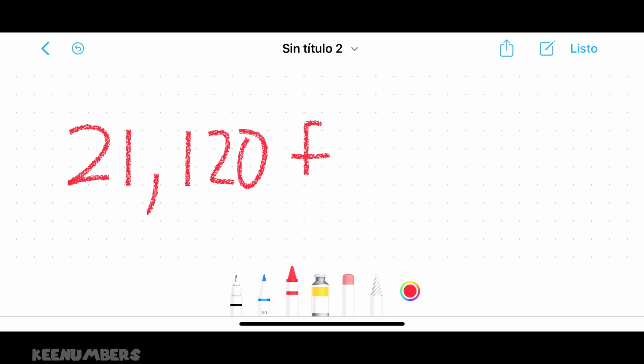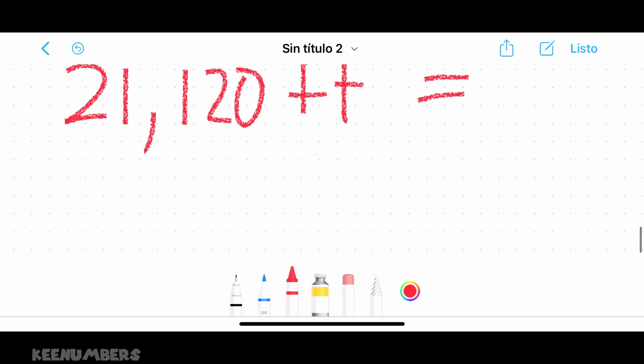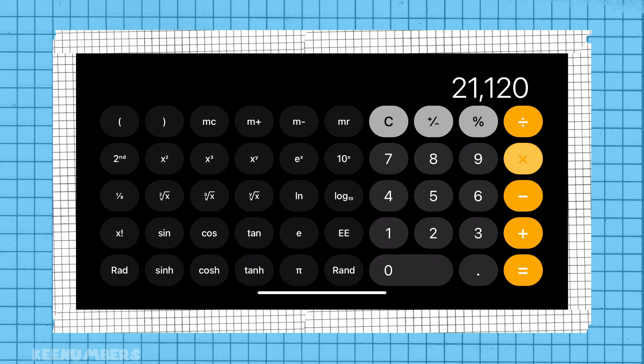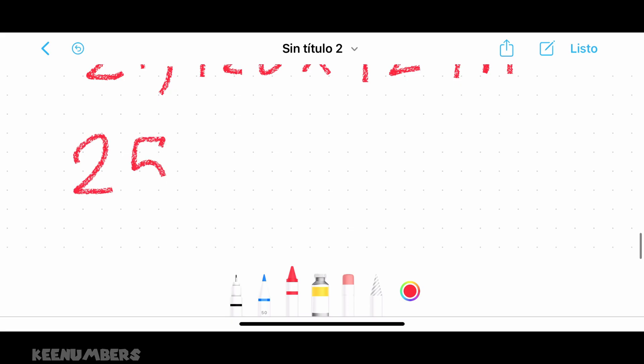Last but not least, 21,120 feet has how many inches? Well, each foot's 12, so if you have 21,120, that means you have a lot of sets of 12 inches. Let's multiply, Mr. Bananas. 21,120 times 12 is 253,440 inches.